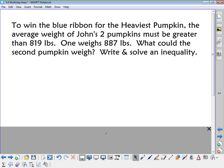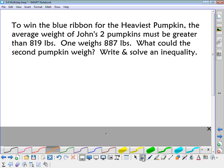To win a blue ribbon in the heaviest pumpkin, the average weight of John's two pumpkins must be greater than 819 pounds. One weighs 887 pounds. What could the second pumpkin weigh? Write and solve an inequality. Okay, so when I want to average two numbers, how do I average them? I add them up and then divide by 2. So that's what we would do if we were averaging John's two pumpkins.